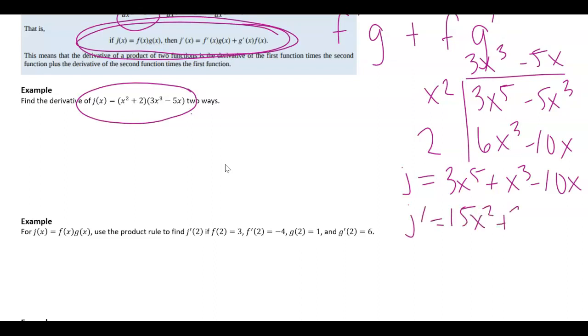Well then j prime is 15x to the fourth plus 3x squared minus 10. Not super terrible to do it that way. You kind of do algebra first and then take the power rule derivative second.